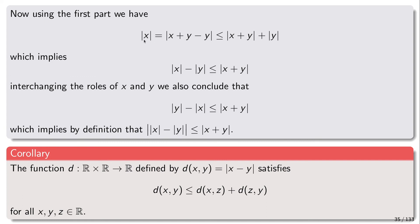Now for the second part, we use a nice trick: write x as (x + y) + (−y), so |x| = |(x+y) + (−y)|. Applying the first part of the triangle inequality, this is no more than |x + y| + |y|. Rearranging, |x + y| ≥ |x| − |y|. By absolute symmetry in x and y, the same procedure gives |x + y| ≥ |y| − |x|. Together, this means ||x| − |y|| ≤ |x + y|. We have proved the second part.